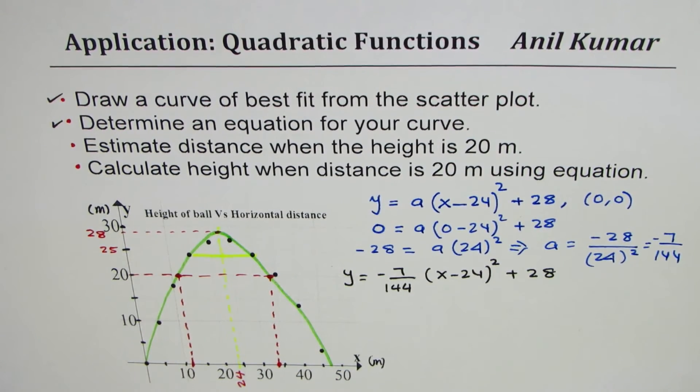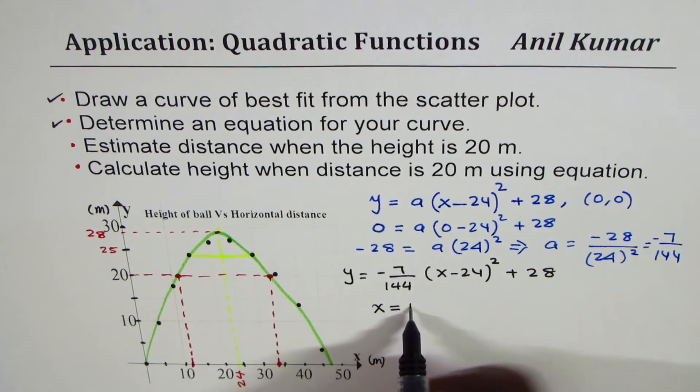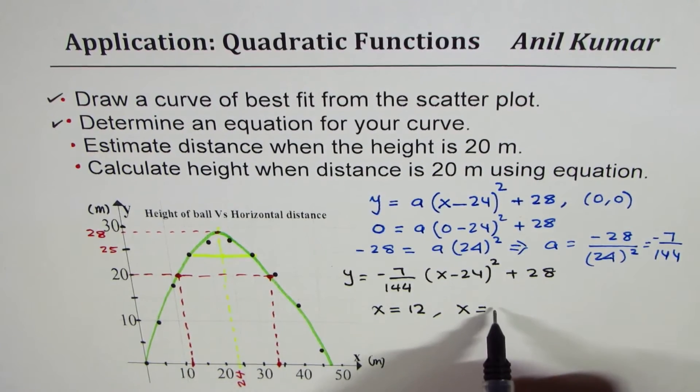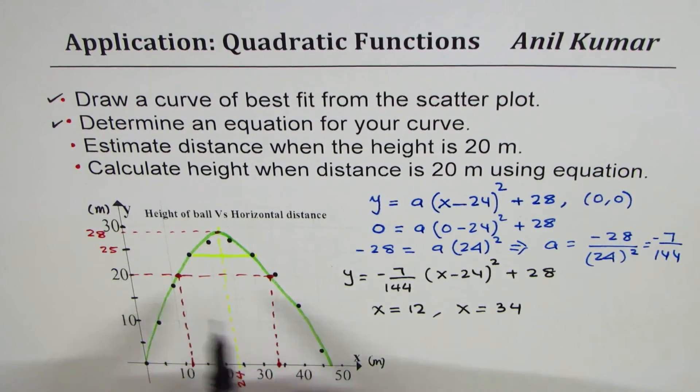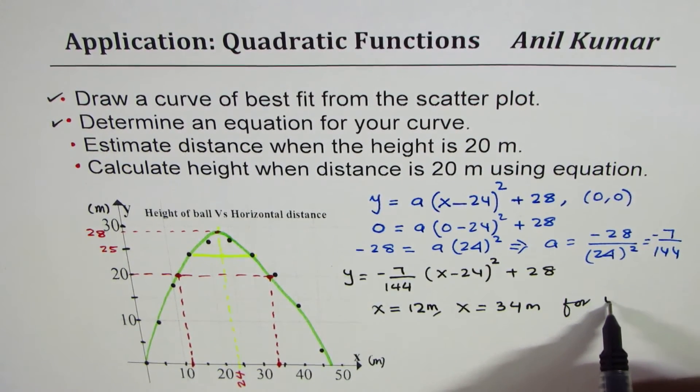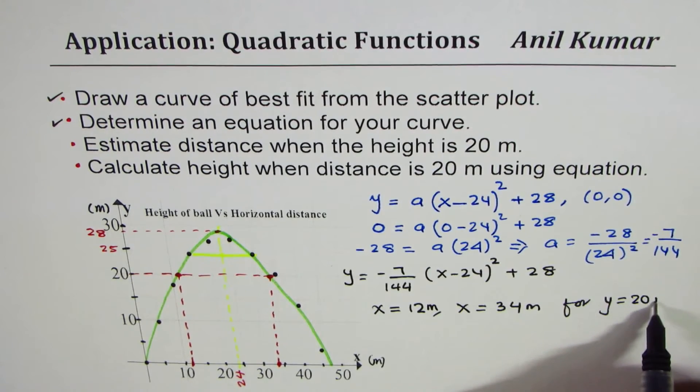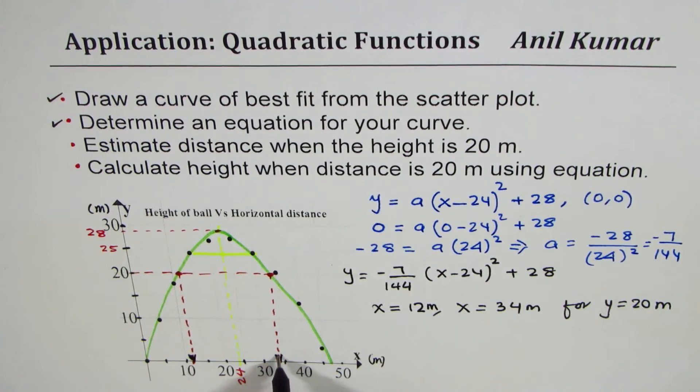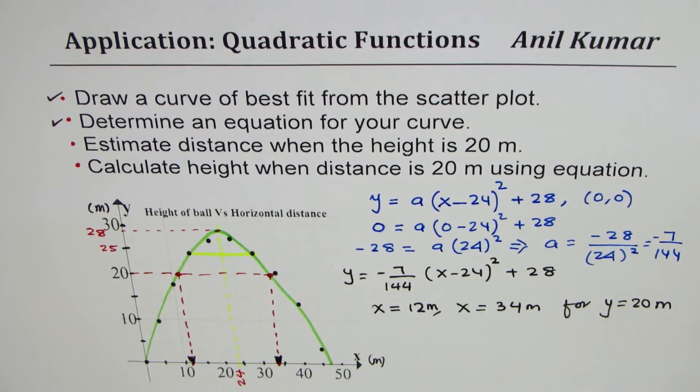For part 3 we can write that the distance x equals - this is like 15 so it could be 10, 11, it could be about 12 - so x = 12 and x = 34. Both are in meters for y = 20 meters. That is how you're going to read - basically you'll draw a horizontal line and that's the value on the x-axis which will give you the right answer. You may get different answers.